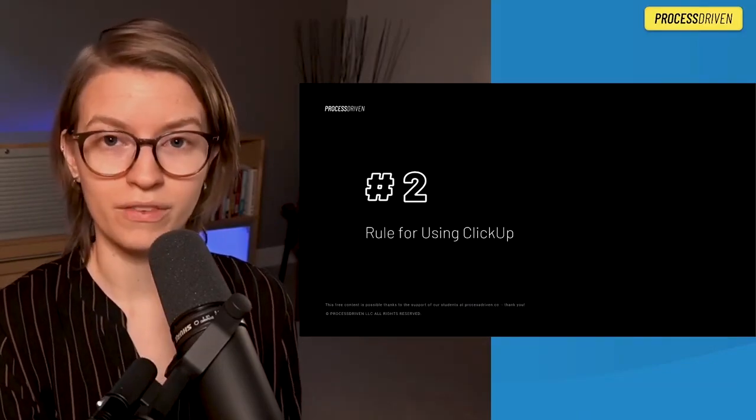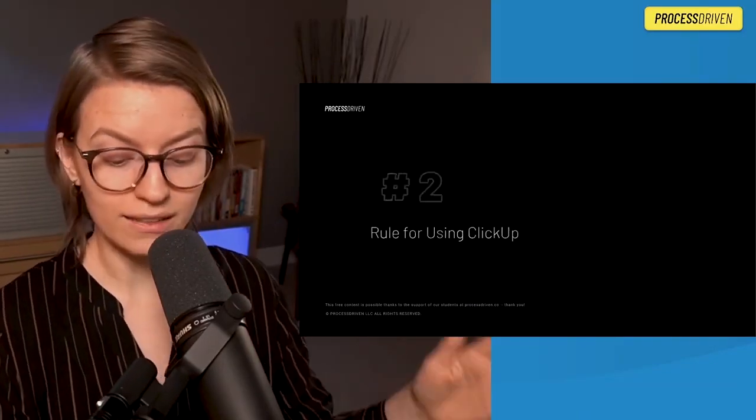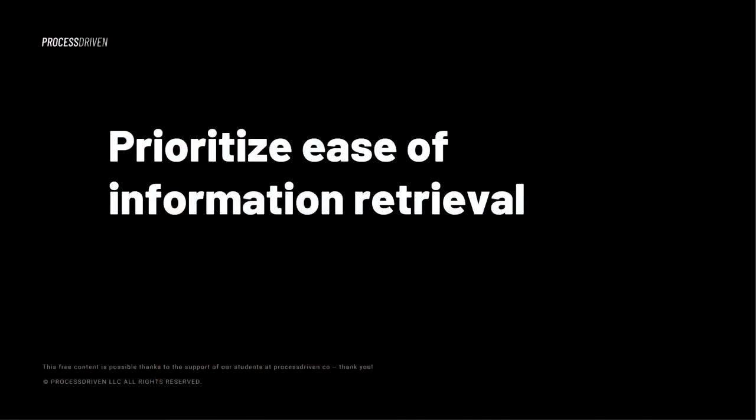Our second rule of thumb: think about how you are storing information. In ClickUp or really any project management tool, we want to prioritize the ease of information retrieval. This basically means we want to make it easier to find the information later, even if that means it's harder to put the information away. All information you're putting into ClickUp — whether that's a chat comment, an attachment, or an actual task — has both an input and an output. We want to make it easy to find the information later, because that is ultimately what's going to matter most.